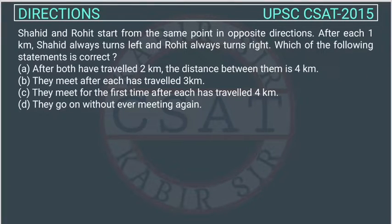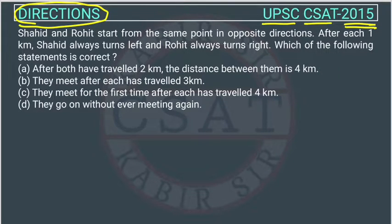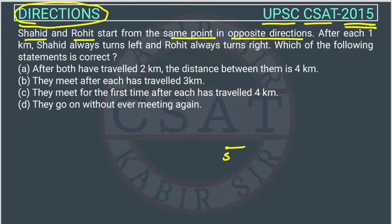This is a question of reasoning from the direction chapter, asked by UPSC in their CSET paper of 2015. Shahid and Rohid start from the same point in opposite directions. Suppose they are starting from here — this is the starting point — and they are moving in opposite directions.